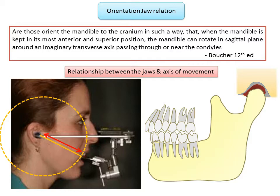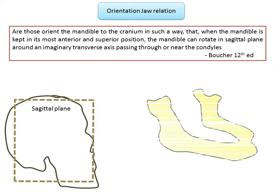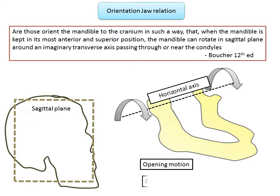It is only a relationship between the jaws and the axis of movement, not anatomical. This is the sagittal plane along which the mandible can rotate. The definition refers to an imaginary transverse axis — shown here as the black dotted line — which is a horizontal axis passing through or near the condyles. When the mandible rotates along this axis during opening and closing, it moves outward and downward.